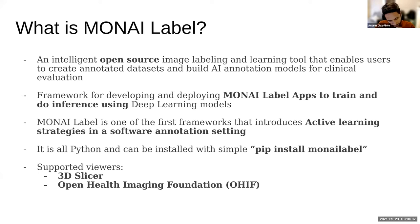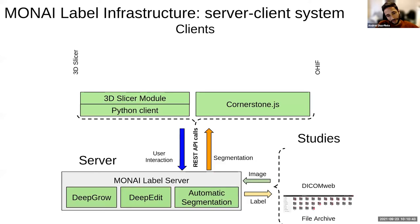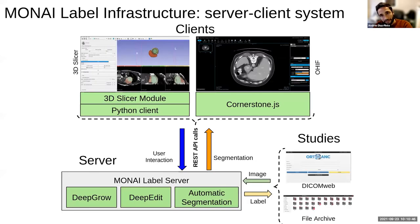MONAILabel is an intelligent tool for facilitating annotation of 3D medical images. It's a framework for developing apps where you can do training and inference of deep learning models. It's one of the first frameworks to introduce active learning strategies in a software annotation setting. Everything is written in Python and can be installed with a simple pip install. We support two viewers: 3D Slicer and the web-based OHIF viewer.